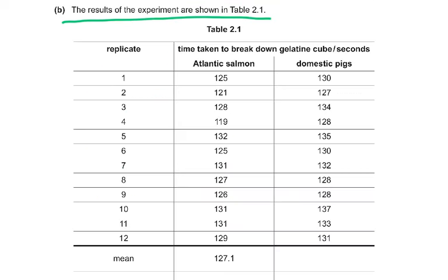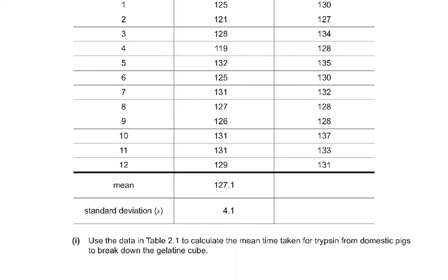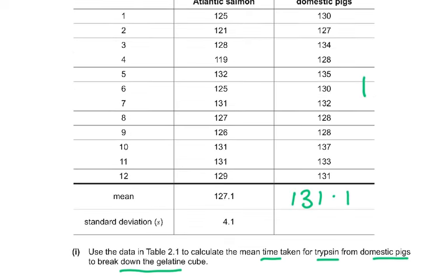The results of the experiment are shown in table 2.1, which includes the mean and standard deviation. The question asks you to calculate the mean time taken for trypsin from domestic pigs to break down the gelatin. The mean is 131.1. To calculate it, you add all the values and divide by 12, giving you 131.1.